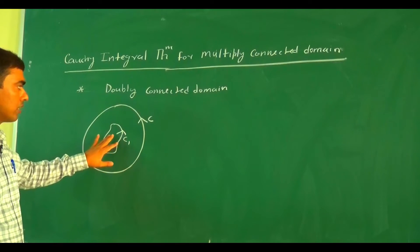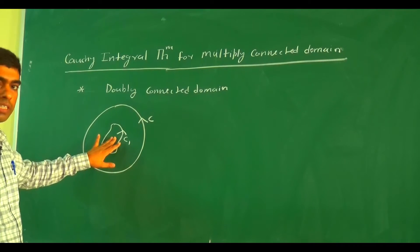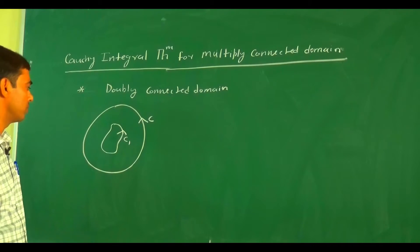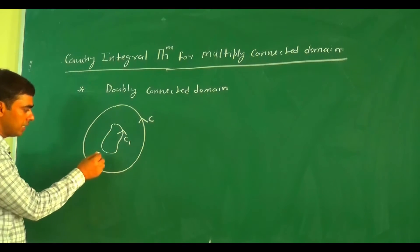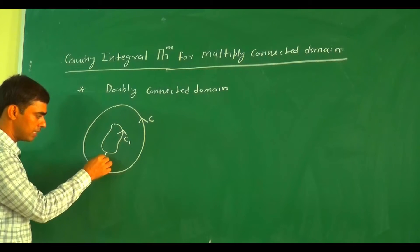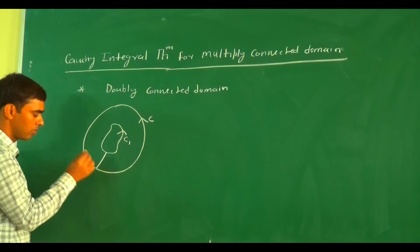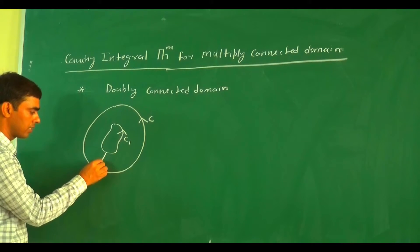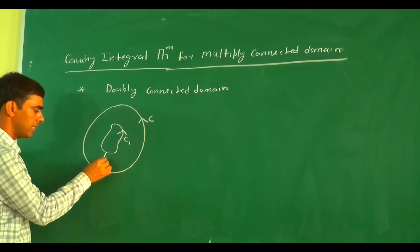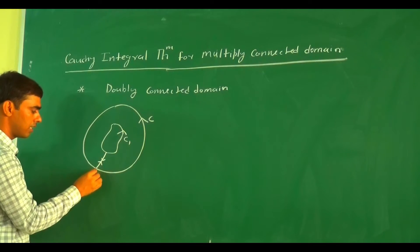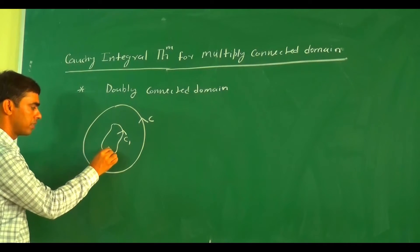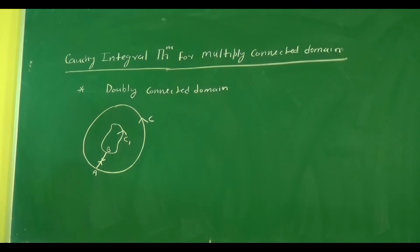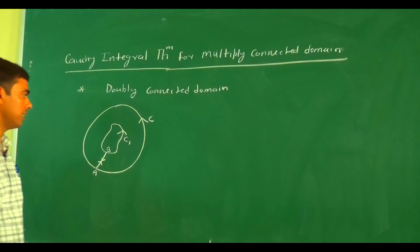Now we try to convert this doubly connected domain into a simply connected domain. We add one bi-directional path, and suppose this cut is AB.